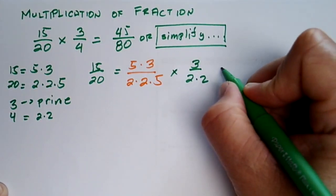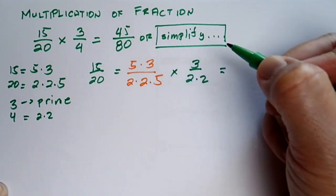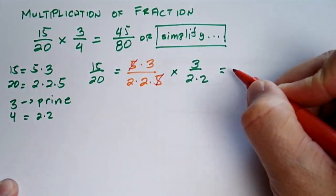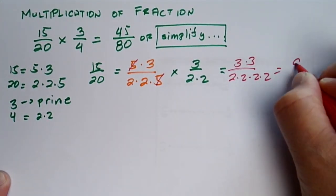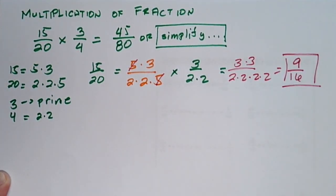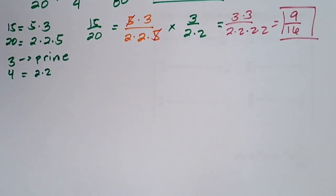After finding the prime factors of these numbers, we can now modify our problems and start canceling the common terms on top and the common terms on the bottom. Whatever is left in our fraction will be our product in simplest form.